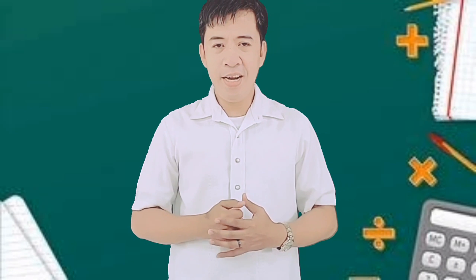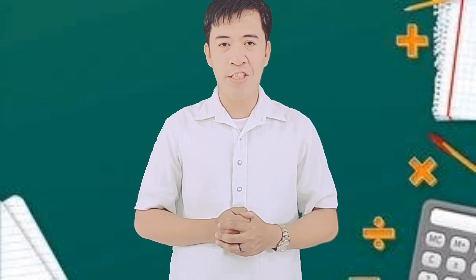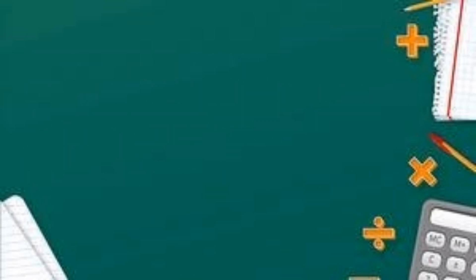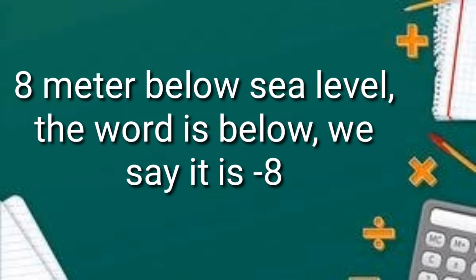Real life situations can be represented by integers. For example, if a temperature reading is 34 degrees above zero, we say it is positive 34 because of the word 'above.' Eight meters below sea level — the word is 'below' — so we say it is negative eight.